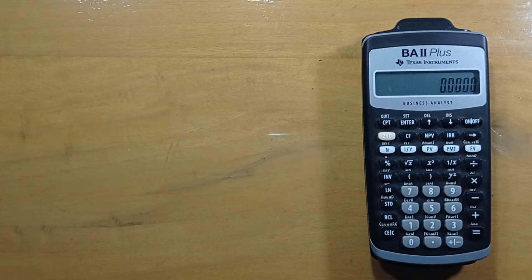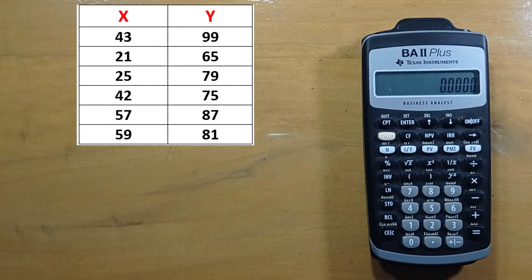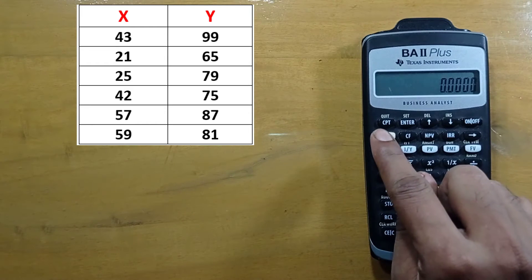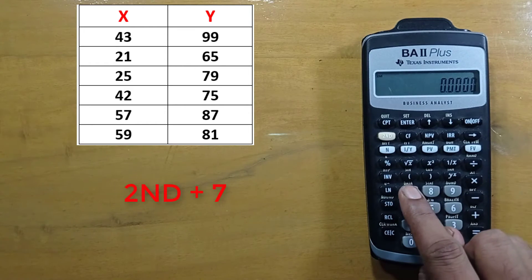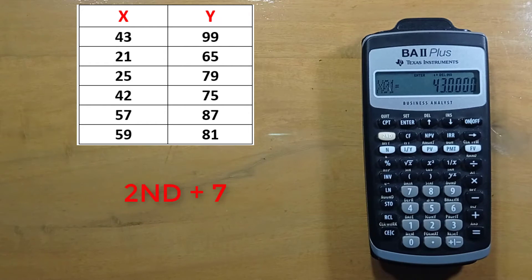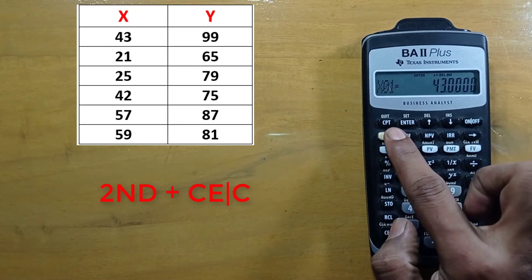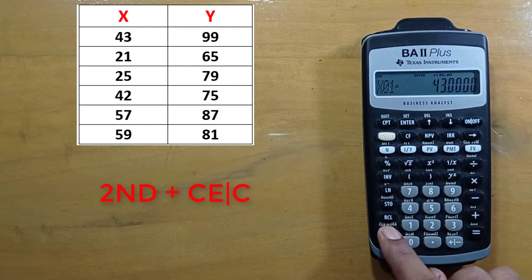In this video I'll show you how you can calculate different regression parameters like slope, y-intercept, correlation coefficient, etc. This is our dataset. Press second and seven to open data entry mode. To clear previously done work, press second and clear work.